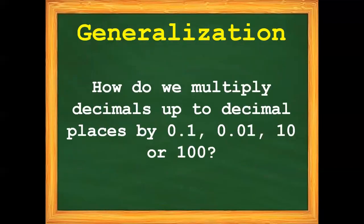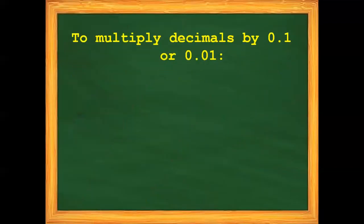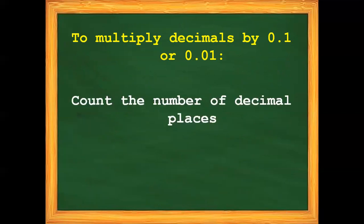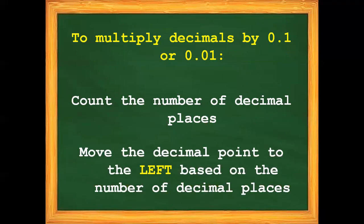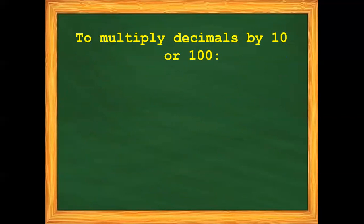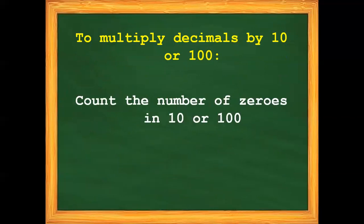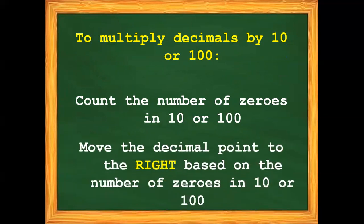Always remember: how do we multiply decimals up to two decimal places by one-tenth, one-hundredth, ten, or one hundred? To multiply decimals by one-tenth or one-hundredth: first, count the number of decimal places; next, move the decimal point to the left based on the number of decimal places. To multiply decimals by 10 or 100: count the number of zeros in 10 or 100; and last, move the decimal point to the right based on the number of zeros.